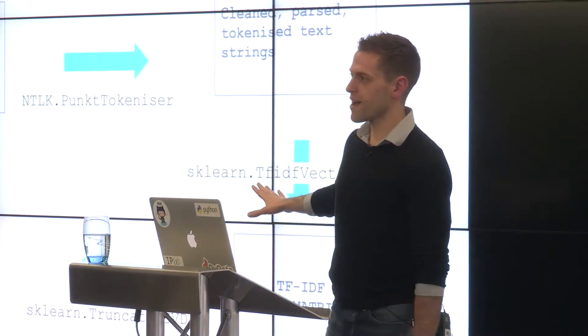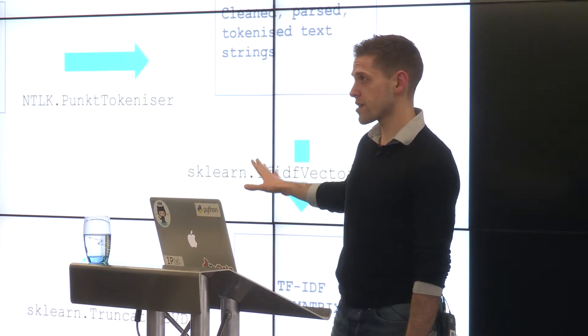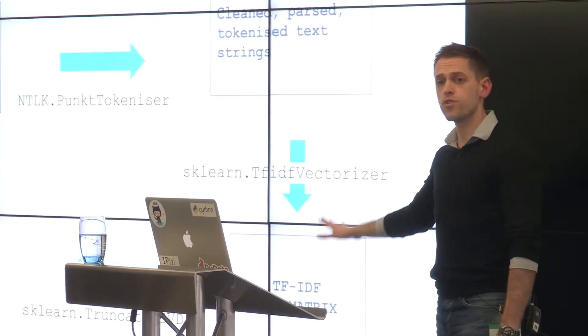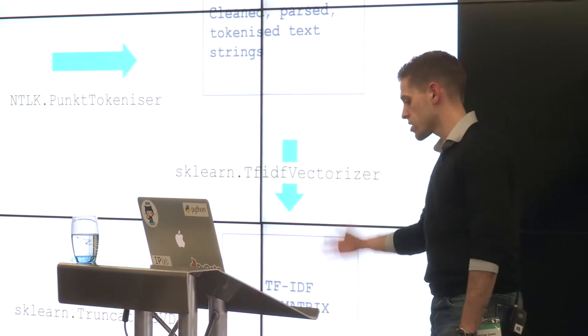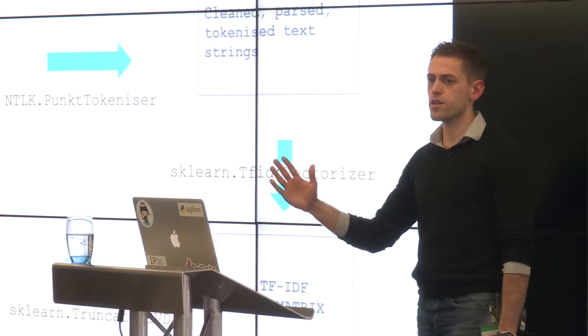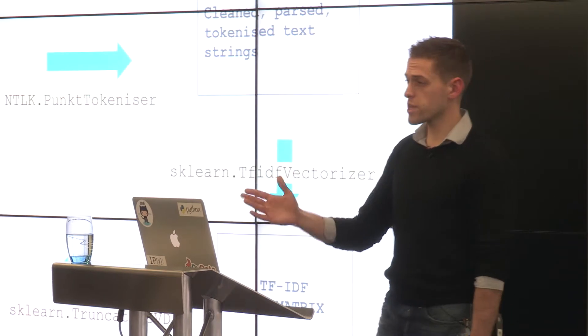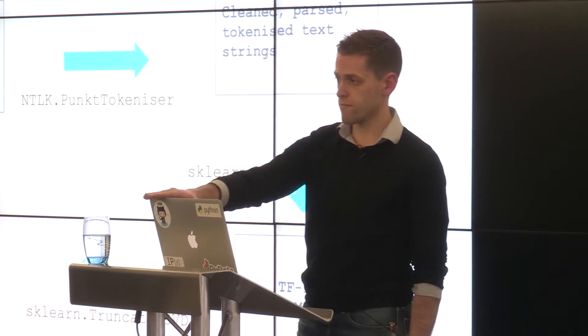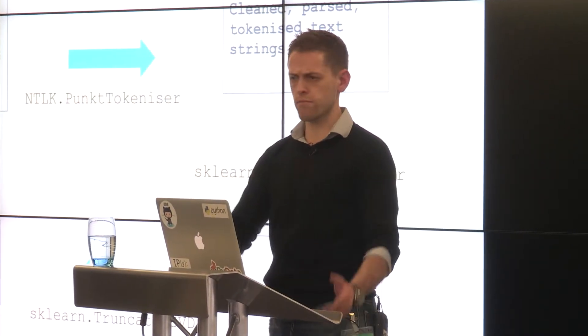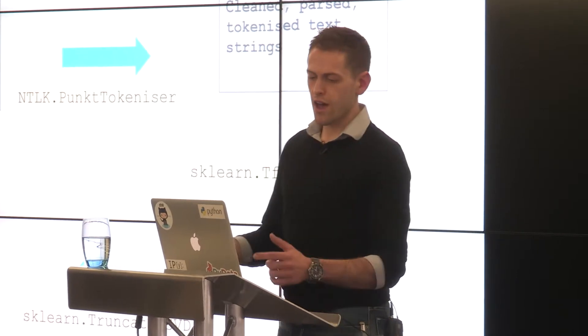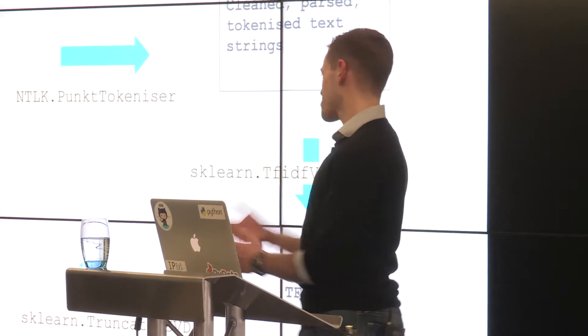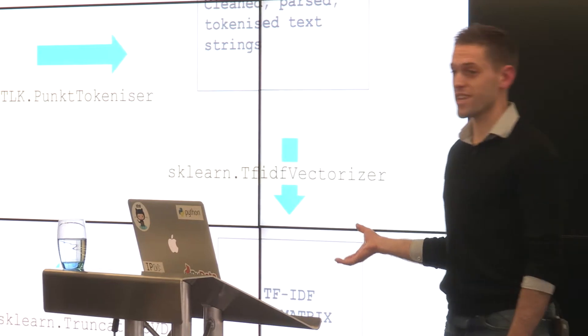So once we tokenized, it uses TF-IDF vectorizer. It's fantastic, really, really simple. And we ended up with a sparse matrix that was about a hundred thousand rows, about twenty thousand features. And this is all running on a laptop, MacBook Air actually, not mine, but this one.